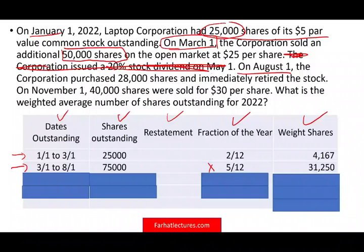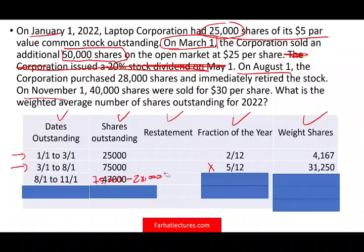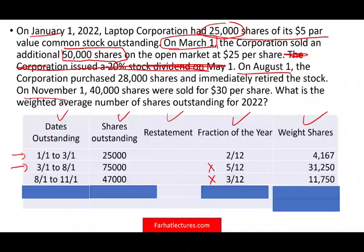On August 1st, we enter the third period running from August through October. The company purchased back 28,000 shares, so we had 75,000 − 28,000 = 47,000 shares. We had those for August, September, and October — that's 3/12 of the year. So: 47,000 × 3/12 = 11,750 weighted average shares.